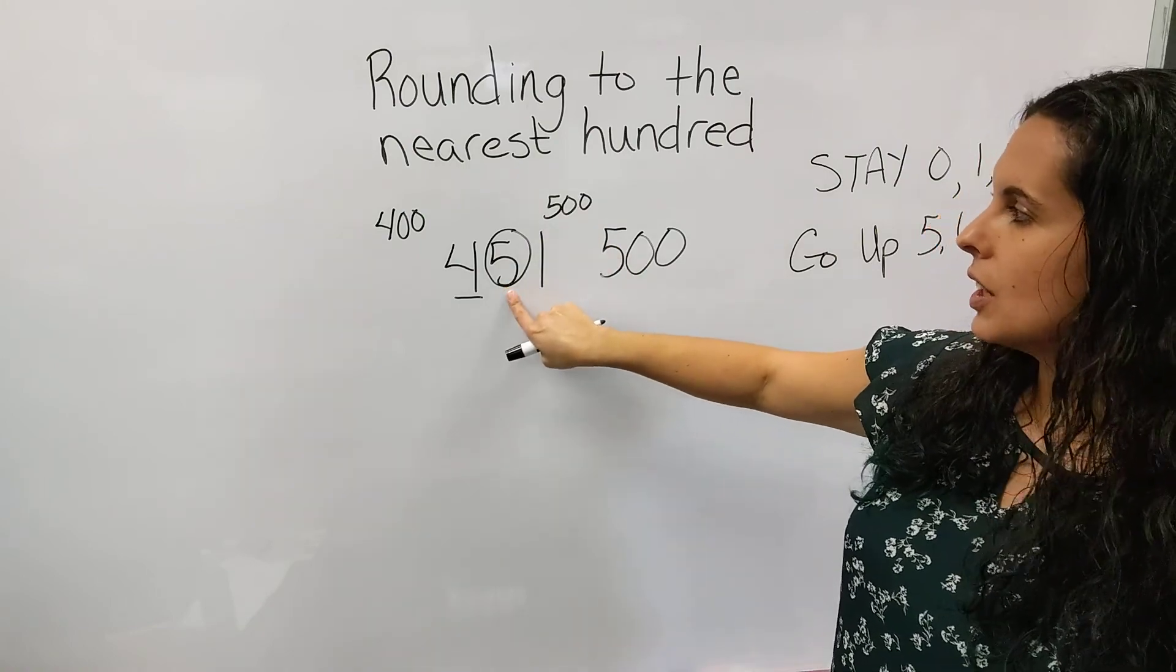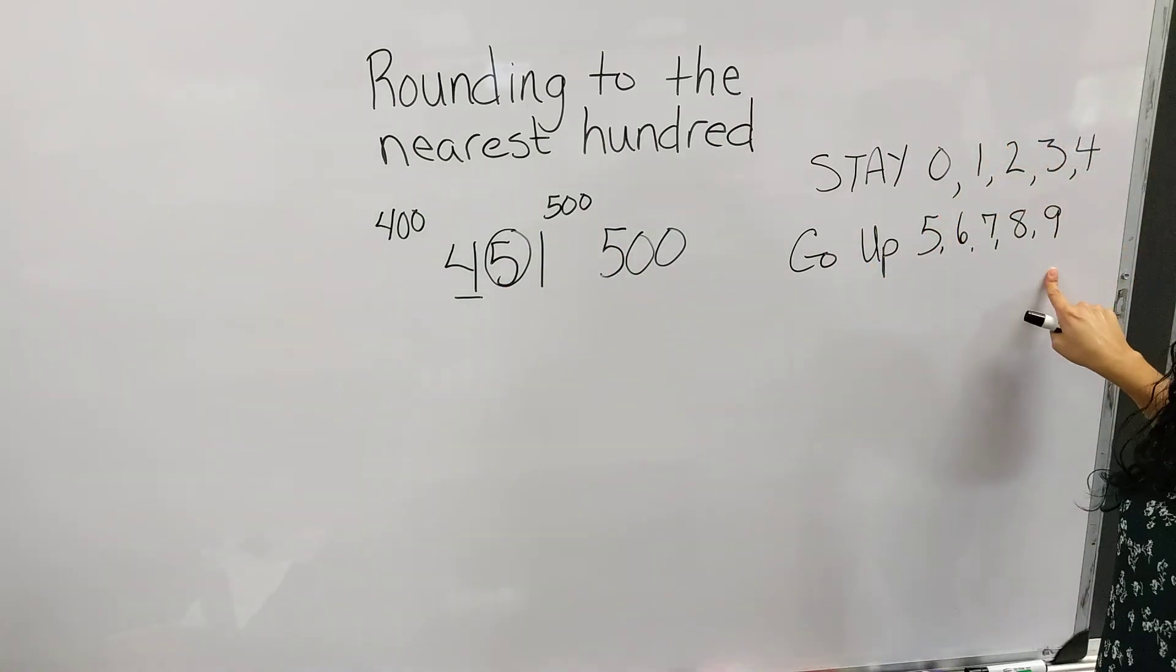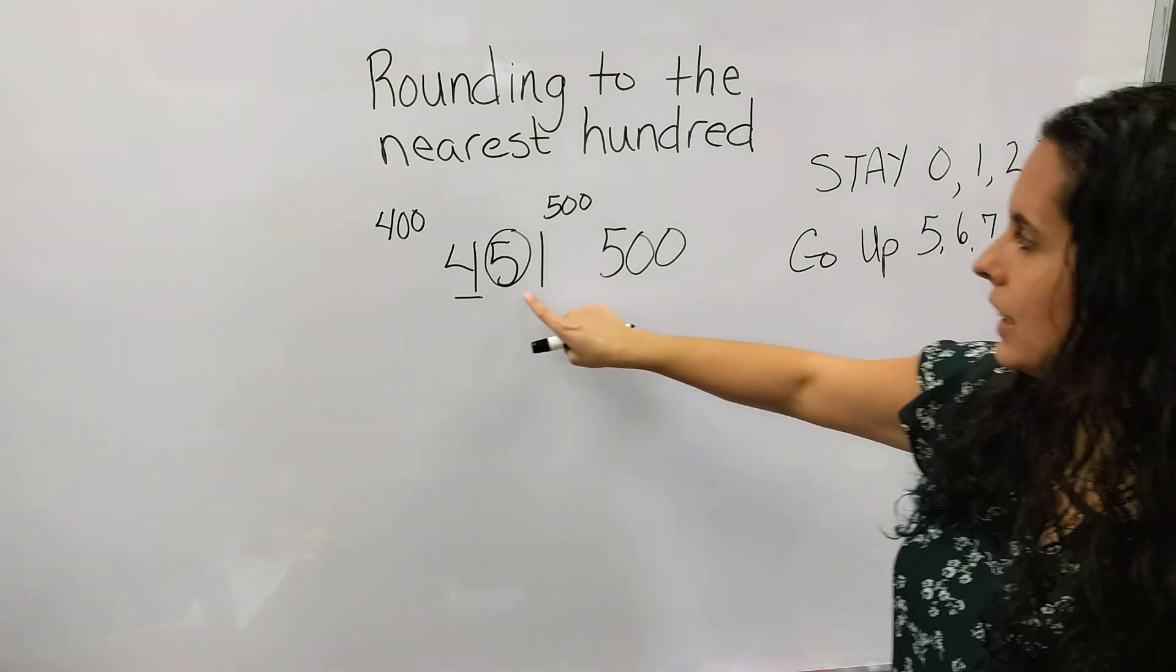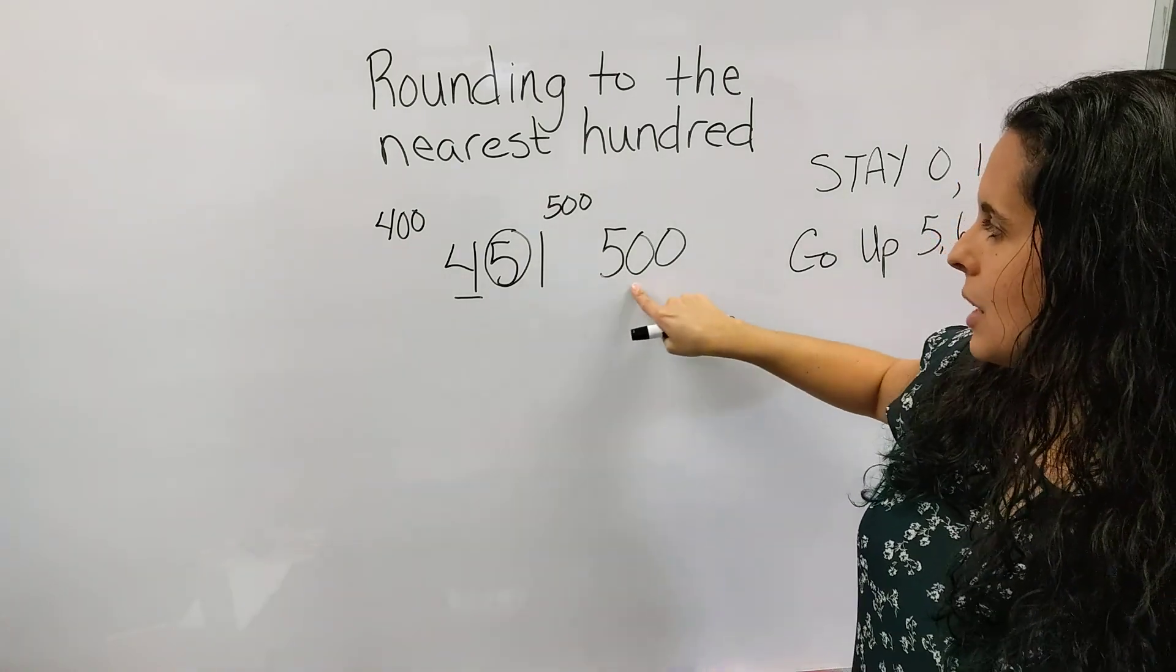Now 5, because it says go up, 5 or more, we round up the line. This makes the number round to 500.